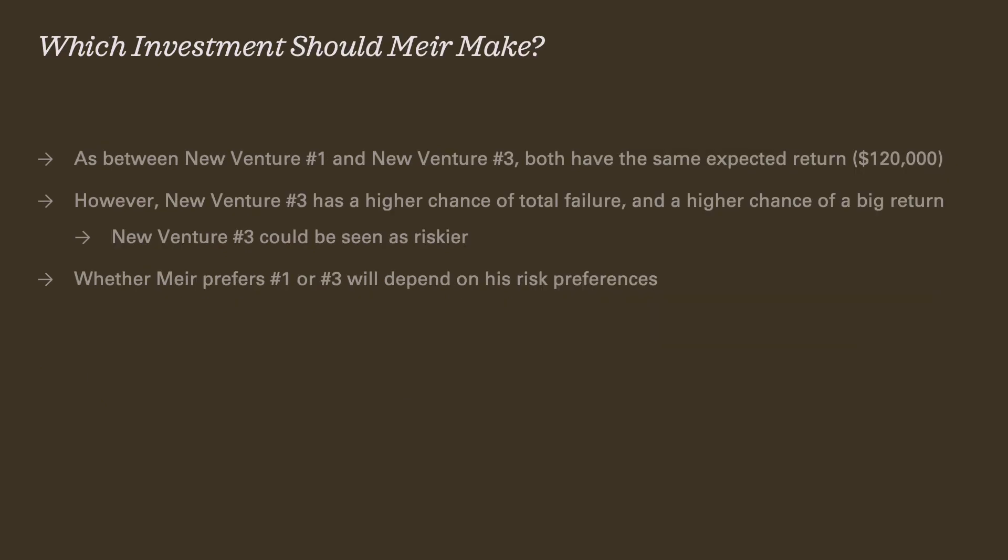Which investment should Meyer make based on his risk preferences? As between venture one and venture three, they both have the same expected return of $120,000. However, venture three has a much higher chance of total failure — 70% — but also a higher chance of a big return. Venture three seems riskier and may be less appropriate for Meyer if he's not particularly wealthy and can't afford to lose all that money. On the other hand, if Meyer is a very wealthy individual with many investments, he may prefer riskier ones in his portfolio for the chance of a big upside. Whether Meyer prefers venture one or venture three depends on his risk preference.